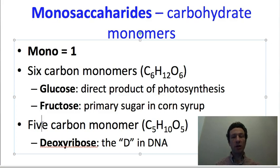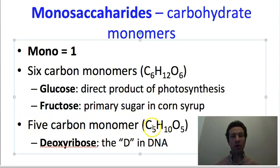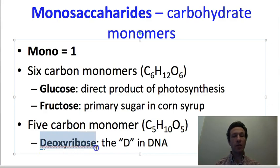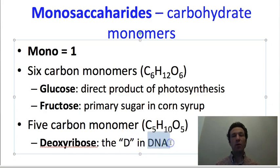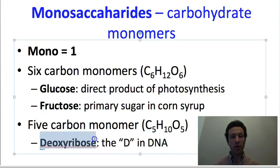There is one 5-carbon sugar that will be important later in the semester. Since we are talking about monosaccharides now, it is worth mentioning. This 5-carbon sugar has the formula C5H10O5. The specific version we'll be interested in is deoxyribose, which gives us the letter D in DNA — DNA stands for deoxyribose nucleic acids, and one part of this molecule is this 5-carbon sugar.